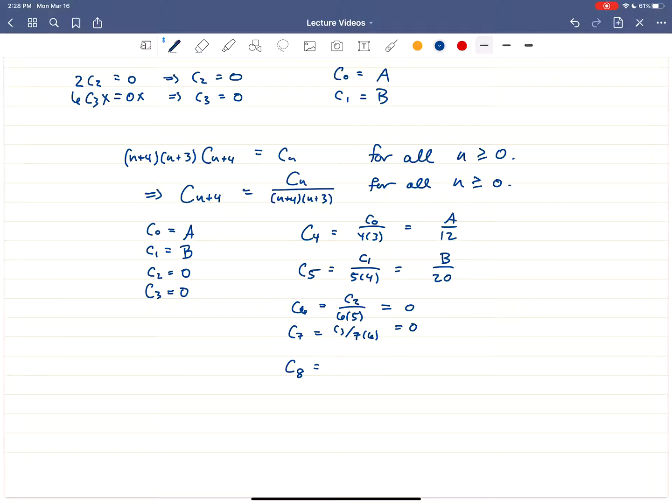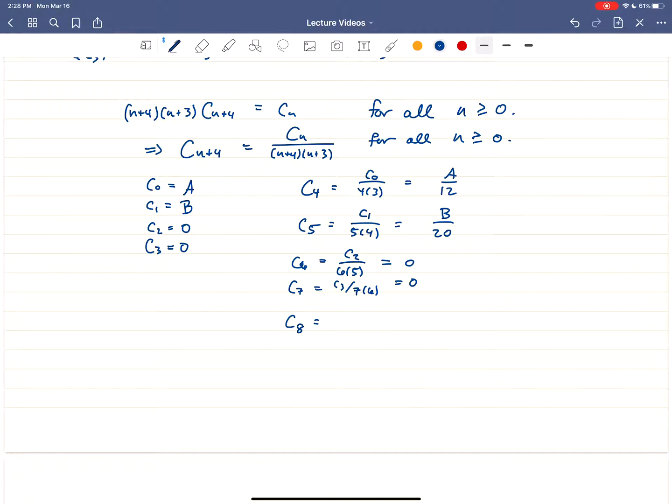And then we go again. So c₈ we're going to have is, let's see, it's going to be c₄ over 8 times 7. So this is going to be A over 12 times 8 times 7. That's A over 56 times 12. That's 12 plus 560, so 672, probably, assuming I didn't just make a silly arithmetic mistake.